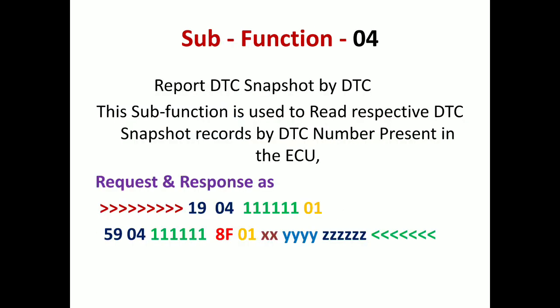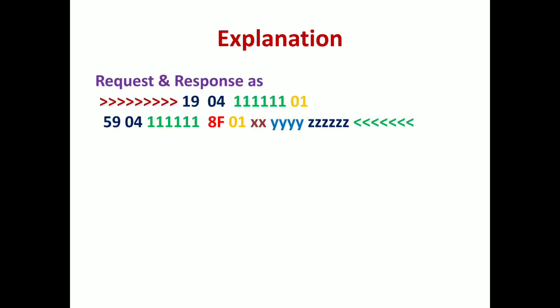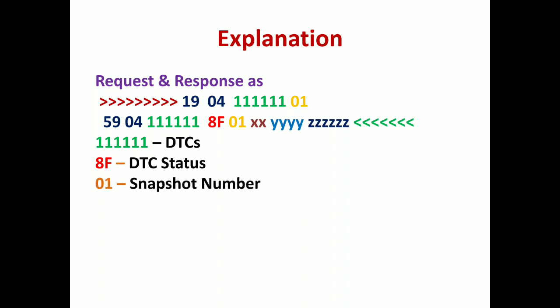Sub-function 0x04 is used to report DTC snapshot data by DTC. If you know the DTC, you can request by the DTC number. This sub-function reads the respective DTC snapshot record by the DTC number present in the ECU — you need to know the DTC number. The request is 1904 111111 01. In the response, 111111 is the DTC, 8F is the DTC status, and 01 is the snapshot number.